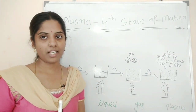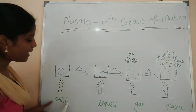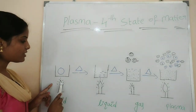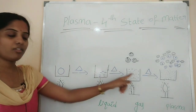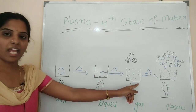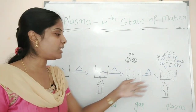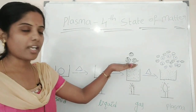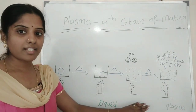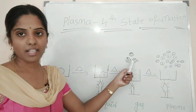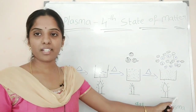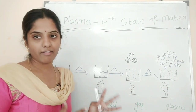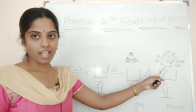So let's repeat: solid, by increasing the temperature, converts to liquid. Ice becomes water. Water, with increased temperature, becomes gas. Gas, with further heat, becomes plasma. Plasma is a hot ionized gas.